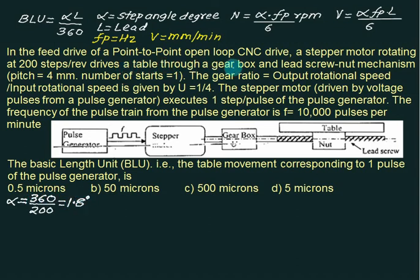Drives the table through a gear box and lead screw nut mechanism. Pitch equals 4 mm, number of starts equal to 1. So lead is same as pitch. This time we are given the gear ratio, output by input rotational speed as 1 by 4.